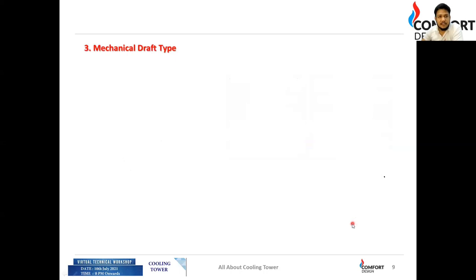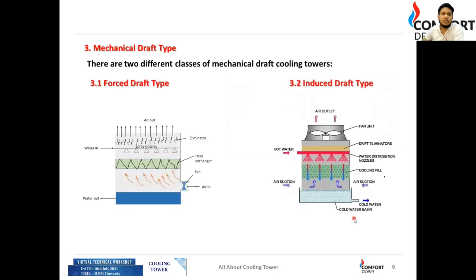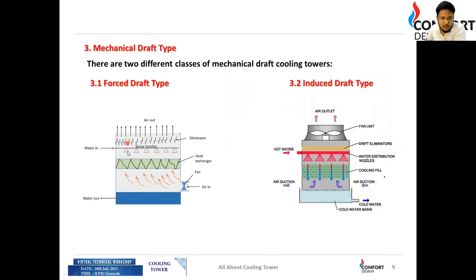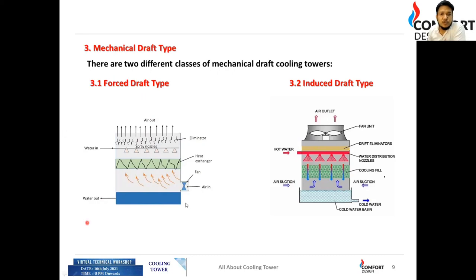The third air draft type is mechanical draft, which includes forced draft and induced draft towers. These are the types used in HVAC applications and can be either cross flow or counter flow. In a forced draft type, a fan forces air through a heat exchanger. Hot water drizzles from the top, comes in contact with the air, heat is transferred, and the cooled water is accumulated at the base for use in the application.